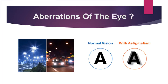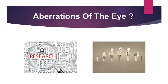The human eye can be affected by a number of aberrations which can reduce the quality of retinal images and general visual perception. Research has shown that age increases the probability of developing higher-order aberrations in particular.